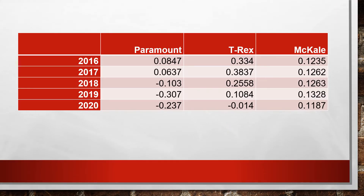For this topic, let's assume we have three companies: Paramount, T-Rex, and McCale. We have provided their stock returns over five years, from 2016 to 2020. For Paramount, we have 8%, 6%, and some negative returns. For T-Rex, we have these expected return values including a negative one. For McCale, we have consistent positive returns.